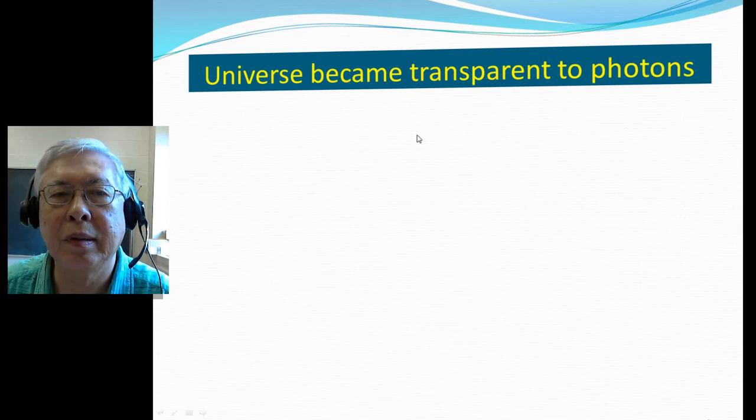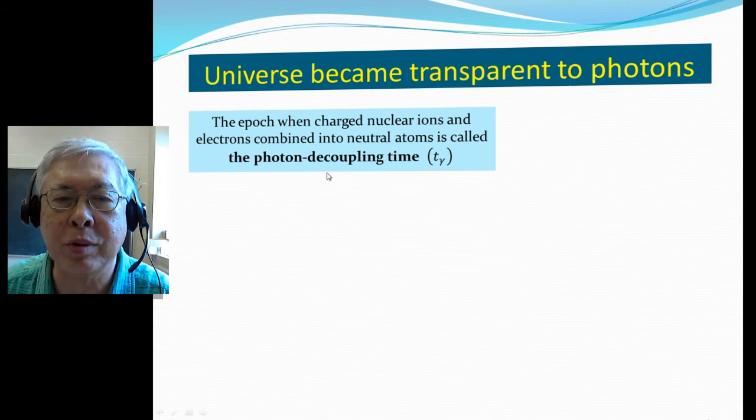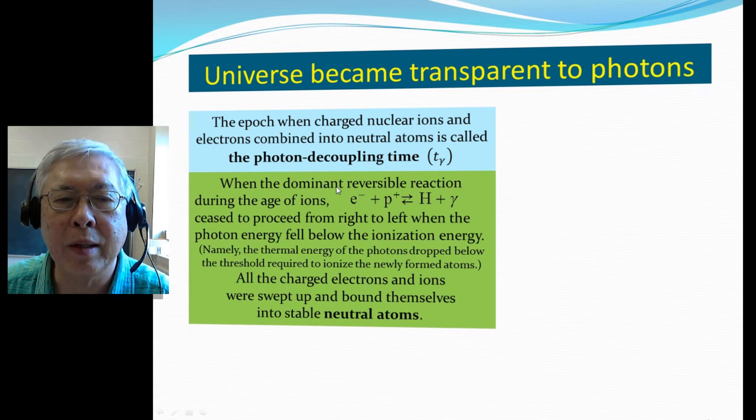So now, how does the universe become transparent to photons? The epoch when the charged nuclear ions and electrons combine to form neutral atoms is called the photon decoupling time. We indicate this with a subscript gamma, the photon decoupling epoch.